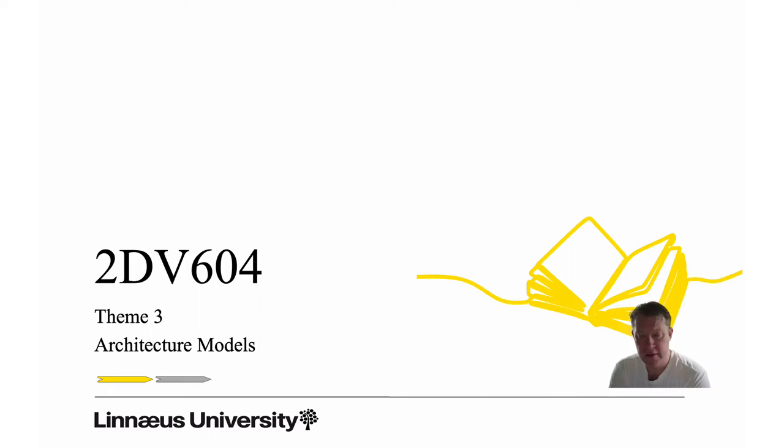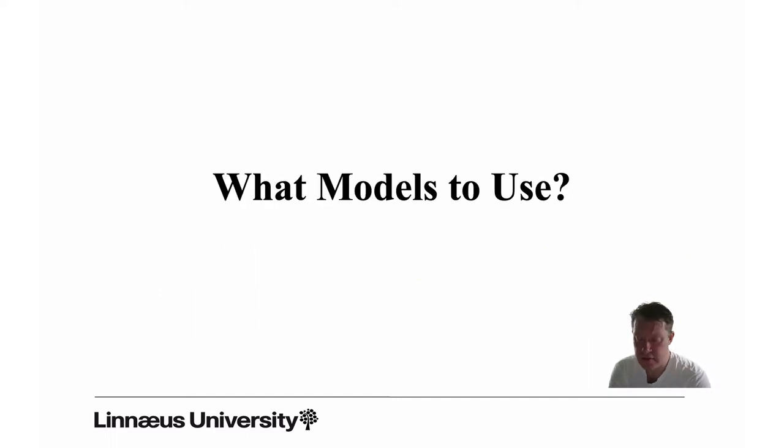This is the second lecture in theme 3, architecture documentation in 2DB604 software architecture course. The focus of this lecture is on models, architecture models, because it's extremely important that when you define your viewpoints, you choose the right models. The models are the means of communication with the stakeholders.